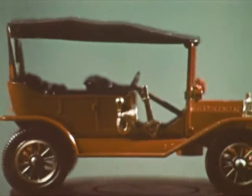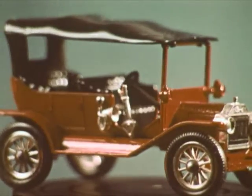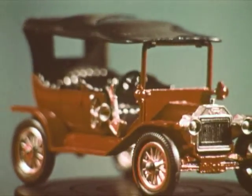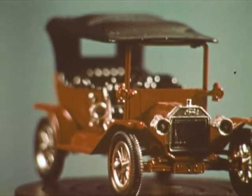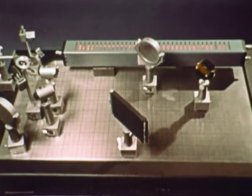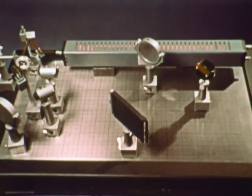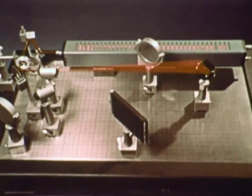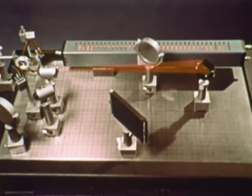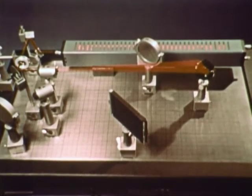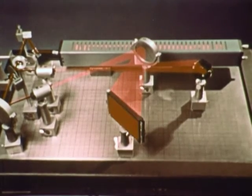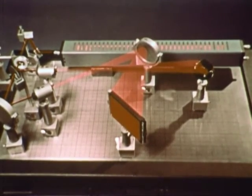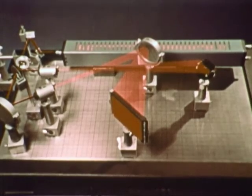If this car were illuminated with a laser, every point on it would reflect some laser light. This is how a hologram is made. Part of the beam is used to illuminate the car. We'll call this the object beam. A second beam, called the reference beam, shines directly on the emulsion and interferes with the light reflected from every point of the car.